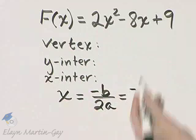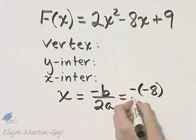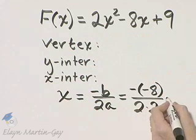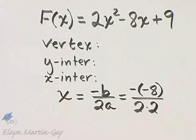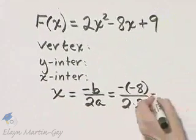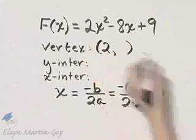So that's negative b, the coefficient of x, which is negative 8, over 2 times a, the coefficient of x squared. And what is negative negative 8 over 4? That's 8 over 4, which is 2. So the x-value of the vertex is 2.